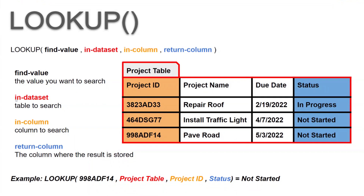Next is the in data parameter. The in data set is essentially the table that you want to go find that value in. So once you've identified the value you want to search for, the second entry is going to be the table to go find that value — whatever that table name is, is what you would enter in there.